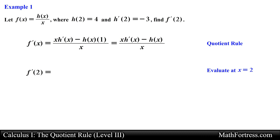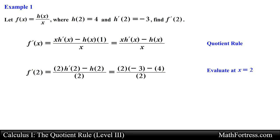Having found an expression for the derivative, we go ahead and evaluate it at x equals 2. From the given values we know that h prime of 2 is equal to negative 3 and h of 2 is equal to 4. Substituting these expressions and simplifying we obtain negative 5 as our final answer.